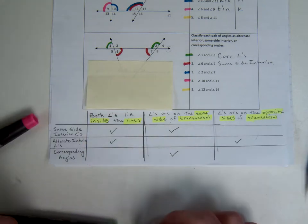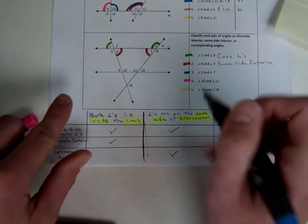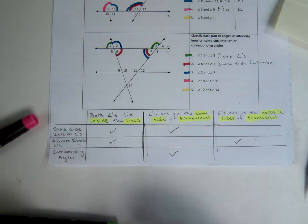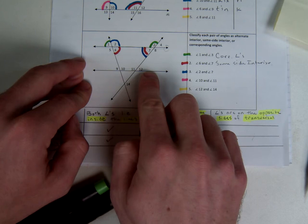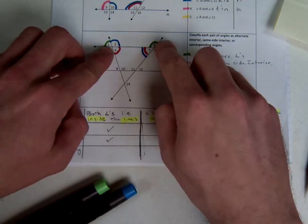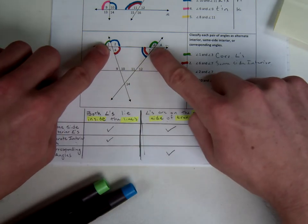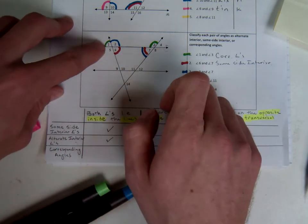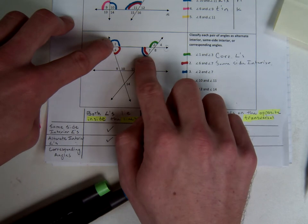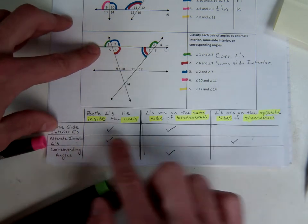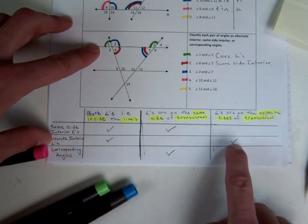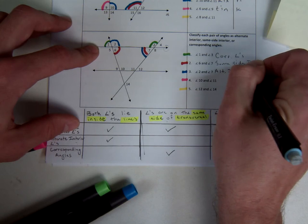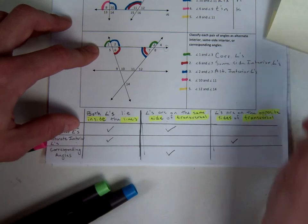Moving on to number three — angles 2 and 7. I'm starting to see a pattern and I know I'm still not working with that particular line. I can see they're bounded by those same lines, and both are on the interior. So I know I'm either looking at same side interior or alternate interior. This time, looking at the transversal, one angle is on one side and the other is on the opposite side, so these are alternate interior angles. Angles 2 and 7 are alternate interior angles.